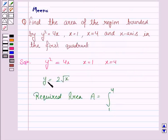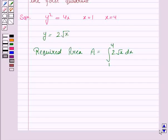So we have ∫2√x dx. Since we have taken just the positive square root, it gives us the area in the first quadrant. Now we will integrate this.